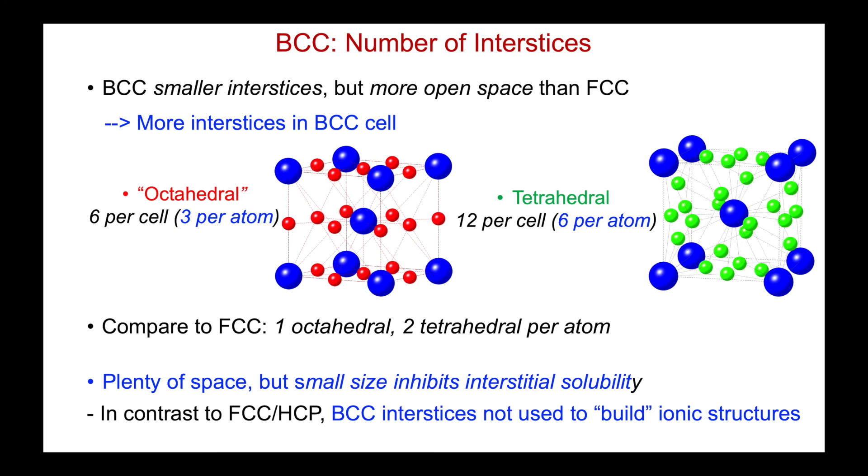For the FCC and HCP structures, we used the interstices to build ionic structures by placing cations into the octahedral and tetrahedral positions. You can't do the same thing for BCC, which is why we didn't pursue it at the time. And there are no sets of ionic structures that can be built by placing cations ions into the interstices of a BCC structure because they're too small.